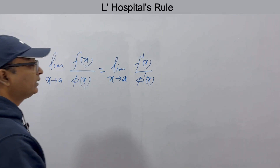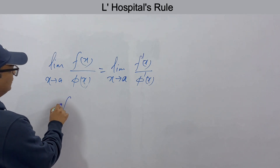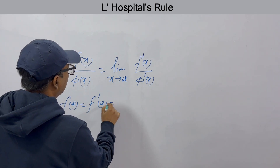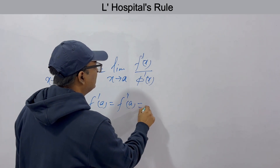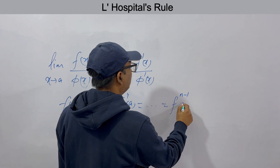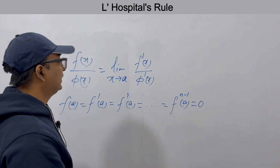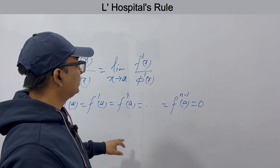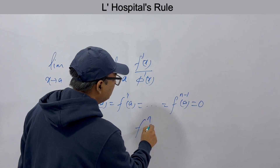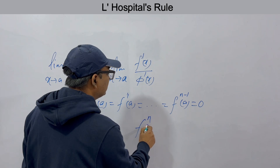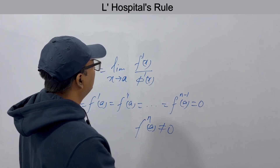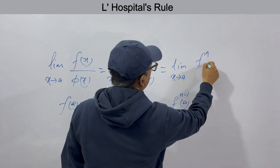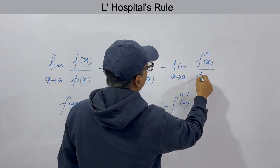This is a very popular rule to evaluate limits. Also, if f(a), f′(a), f″(a), up to the (n−1)th derivative at a are all 0 by 0, that is each successive derivative also gives 0 by 0, then in that case, if you keep on taking derivatives and the nth derivative is not equal to 0, this equals the limit as x tends to a of f⁽ⁿ⁾(x) by φ⁽ⁿ⁾(x).